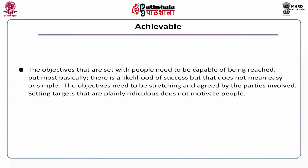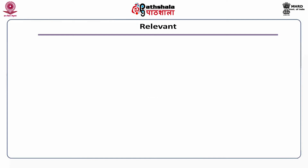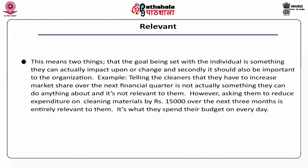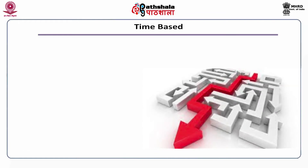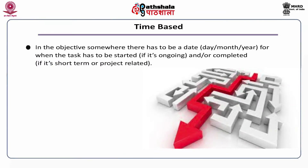Achievable: the objectives that are set with people need to be capable of being reached — there is a likelihood of success, but that does not mean easy or simple. The objectives need to be stretching and agreed by the parties involved. Setting targets that are plainly ridiculous does not motivate people. Relevant: this means two things — that the goal being set with the individual is something they can actually impact upon or change, and secondly, it should be important to the organization as well. Time-based: in the objective, there has to be a date for when the task has to be started and completed.